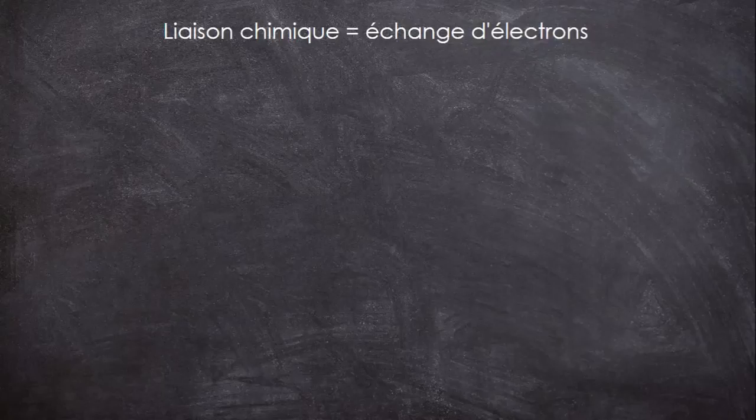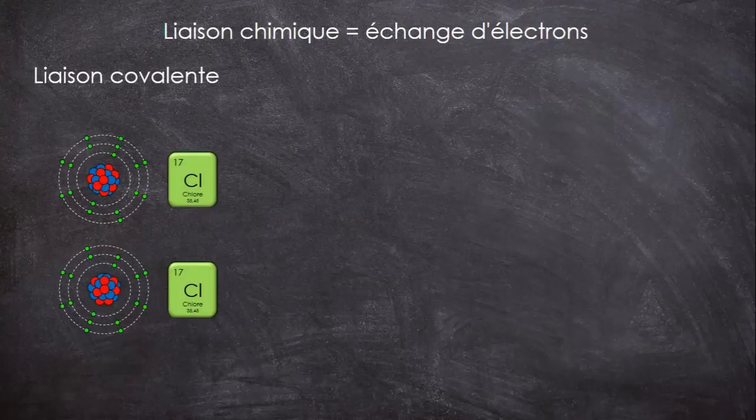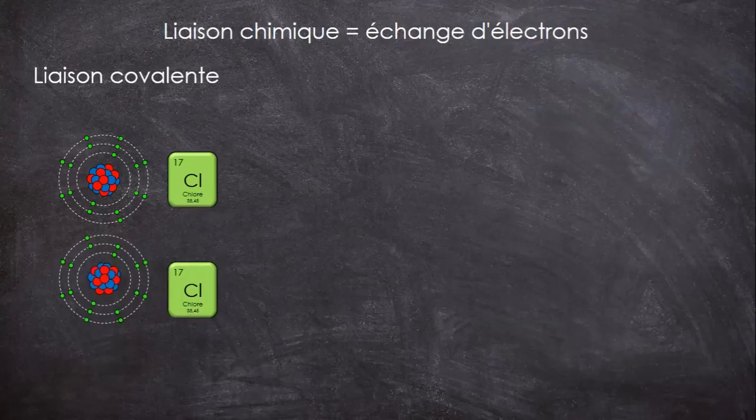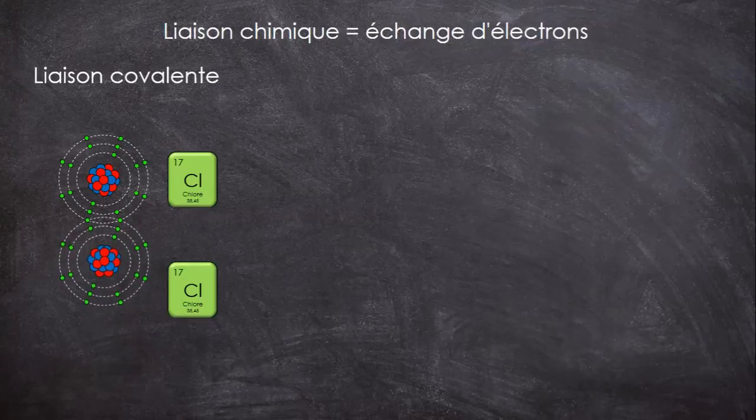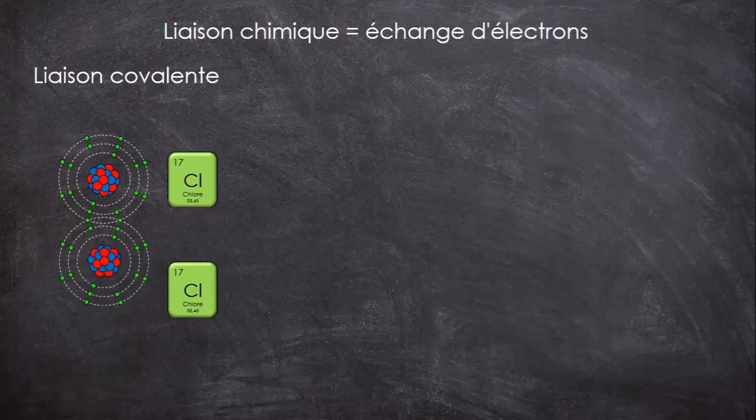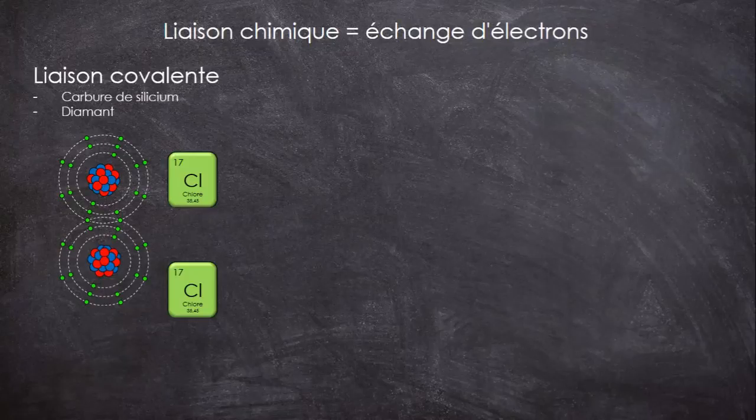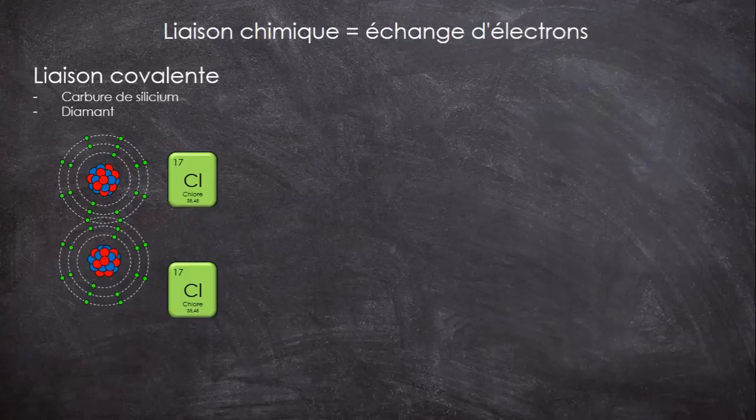Le premier type de liaison est la liaison covalente. Les atomes mettent des électrons en commun pour compléter leur couche, de façon équitable, car ils ont une électronégativité similaire ou égale si ce sont les mêmes atomes. Alors, l'électronégativité, c'est la tendance que va avoir un atome à attirer les électrons à lui. C'est typiquement le genre de liaison que l'on retrouve dans le carbure de silicium et dans le diamant. Étant utilisé pour des outils de coupe, vous vous doutez bien que c'est plutôt un type de liaison très résistant.